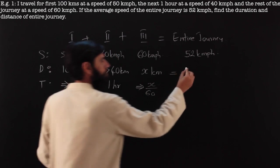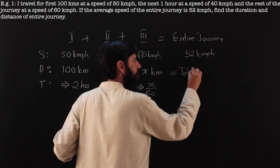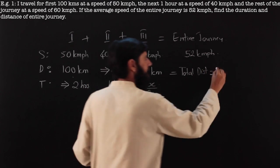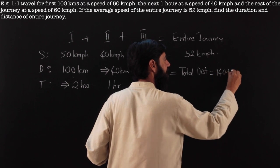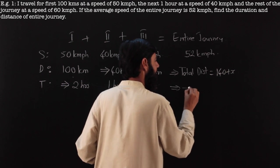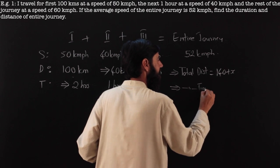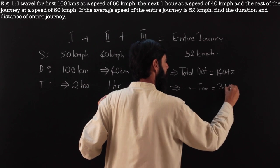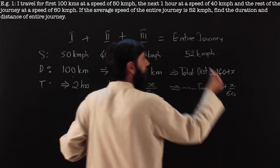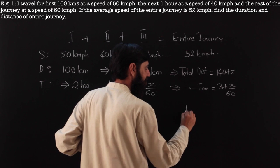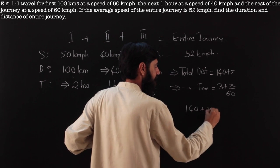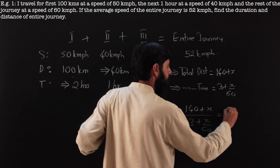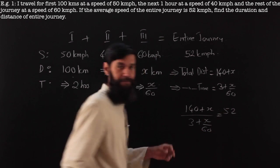The total distance is going to be 100 plus 40 plus x, that is 140 plus x. Total time is 2 hours and 1, 3 hours, 3 plus x by 60. And I know the speed is 52.